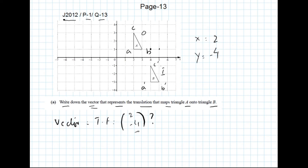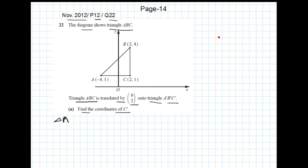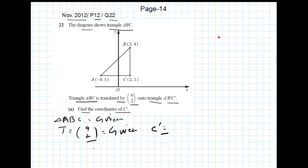If you have any question, please ask in the comment section. This is another question — November 2012 Paper 1/2, question number 22. Triangle ABC is translated by column vector (9, 2) onto triangle A dash B dash C dash. We need to find the coordinates of C dash. We use the formula: Image = Object + Translation factor.